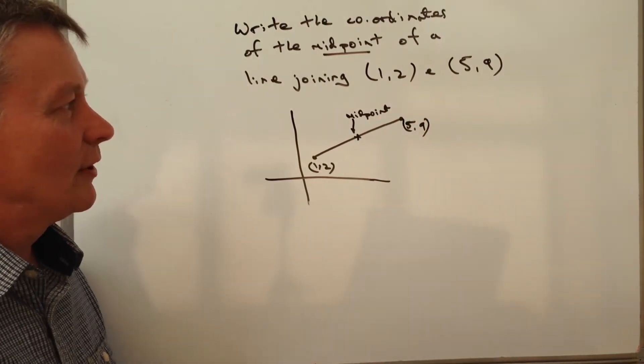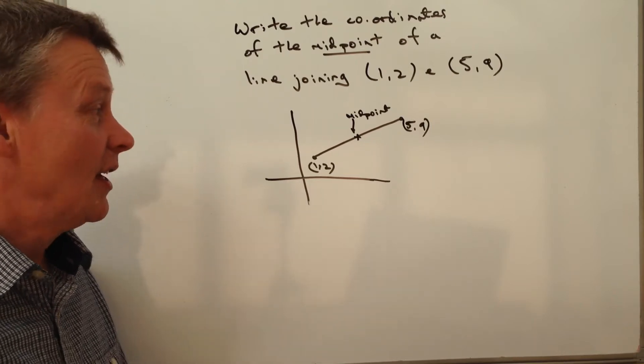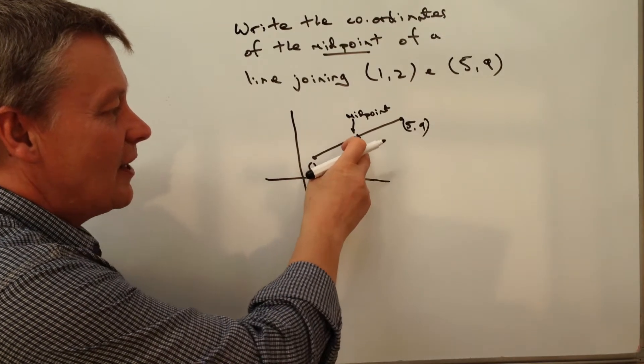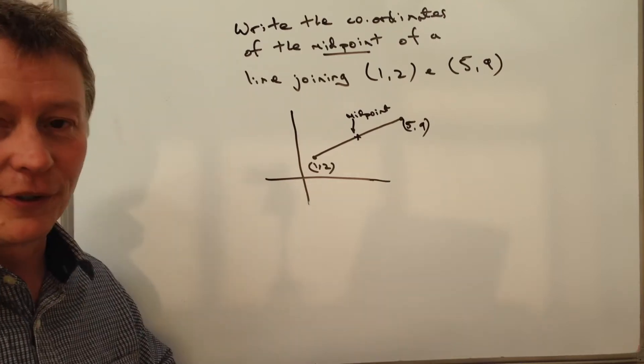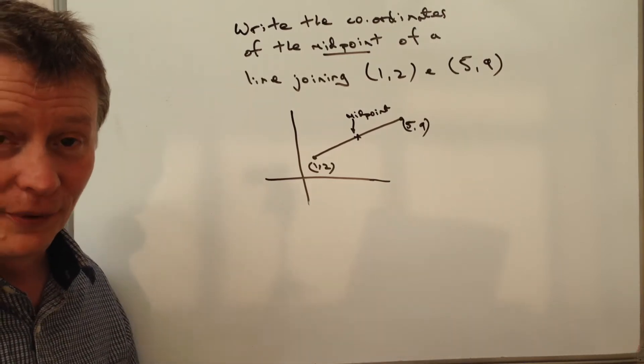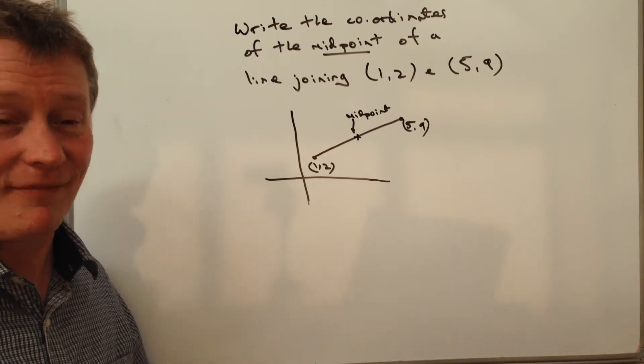Pretty much all you really do with this question is dealing with averages. To find this midpoint you need to find the average of the x coordinates and then the average of the y coordinates, and that's it.